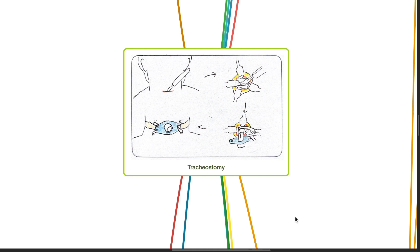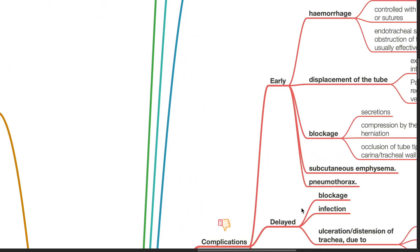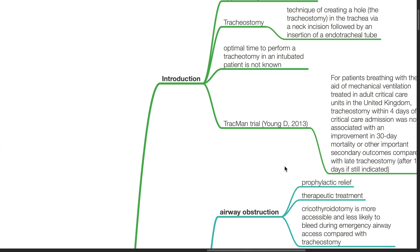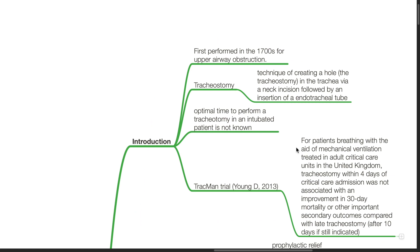Good morning, Dr. Phil here. Today we will be discussing tracheostomy. It was first performed in the 1700s for upper airway obstruction. Tracheostomy is the technique of creating a hole — the tracheostomy — in the trachea via a neck incision, followed by insertion of an endotracheal tube.